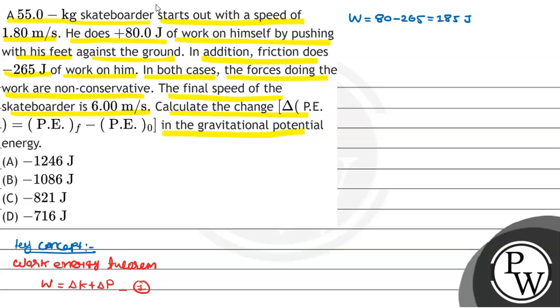Now work done is available. We have to find change in kinetic energy, Bacho. So final minus initial. In kinetic energy, Bacho, mass is constant so 1 by 2m constant will come, vf square minus vi square. So delta KE will be 1 by 2m, and in place of m will come 55.